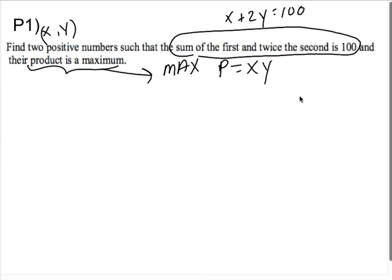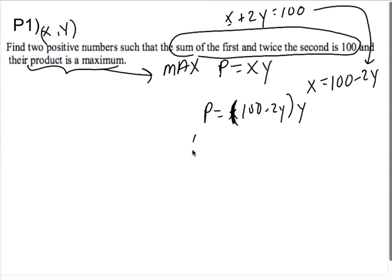Because that's three variables, you need an auxiliary equation. And here's your auxiliary equation: the sum of the first and twice the second is 100, so X + 2Y = 100. It doesn't matter which equation - you could solve for either variable. I'm going to go ahead and solve for X because it's easier. So my product is X, which is 100 - 2Y, times Y. My product would be 100Y - 2Y².